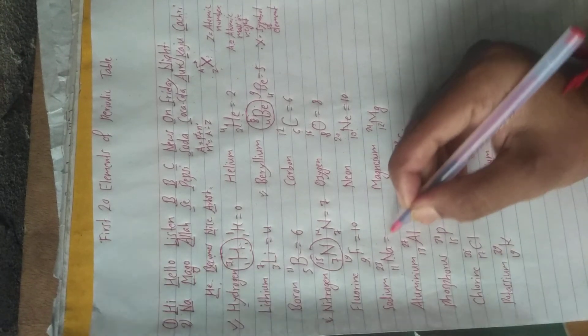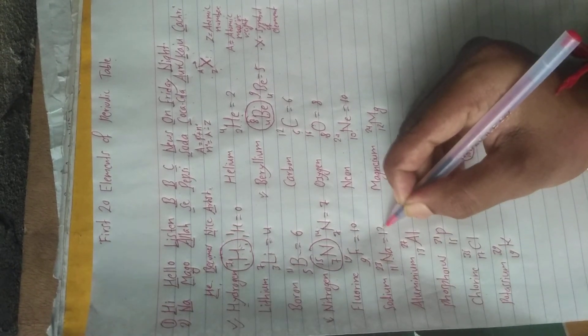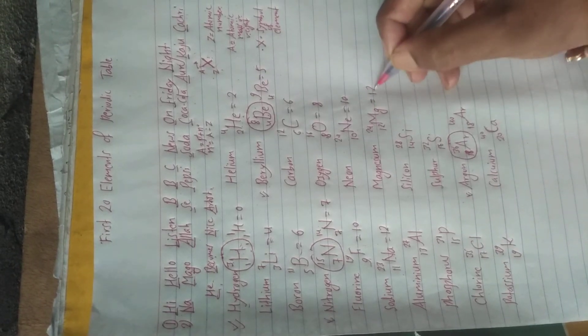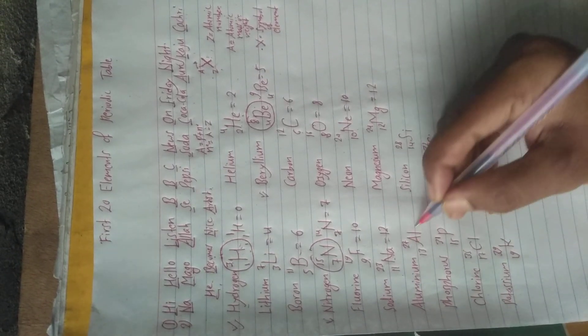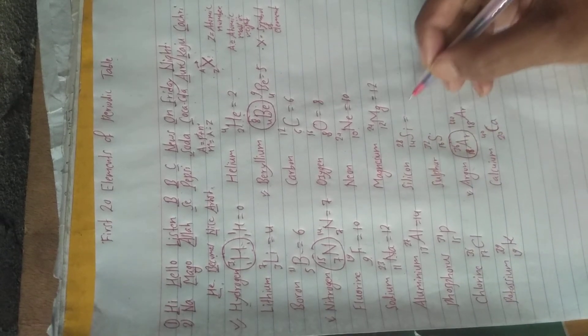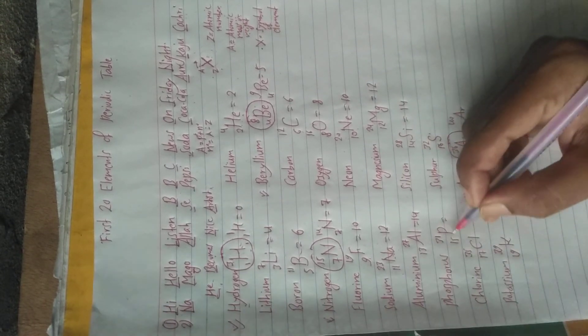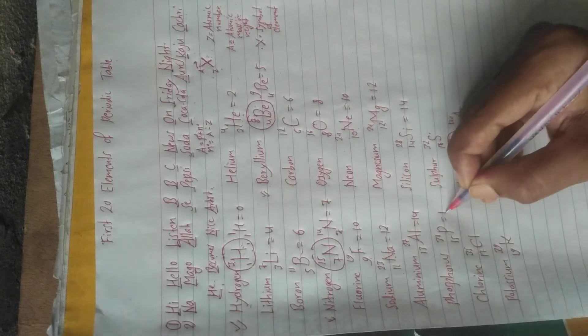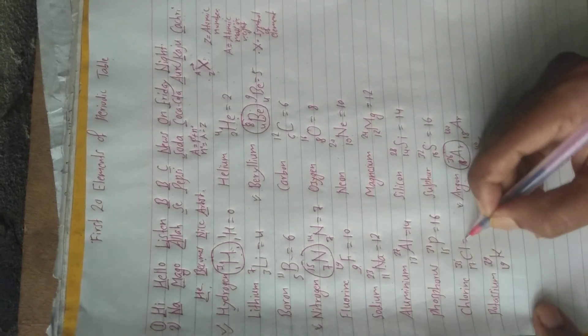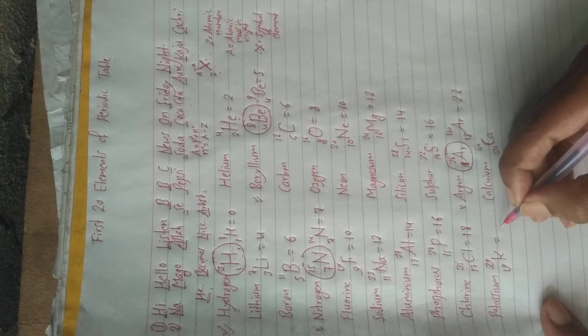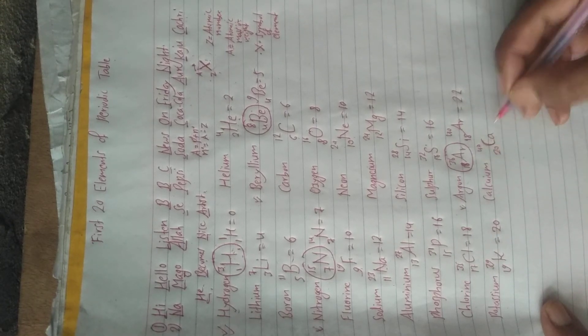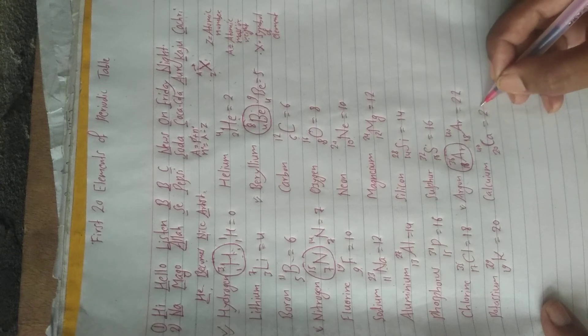Continuing neutron calculations for elements 11 to 20: 23−11=12, 24−12=12, 27−13=14, 28−14=14, 31−15=16, 32−16=16, 35−17=18, 40−18=22, 39−19=20, and 40−20=20.